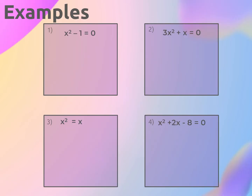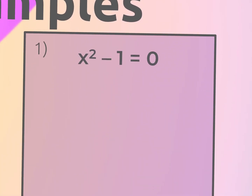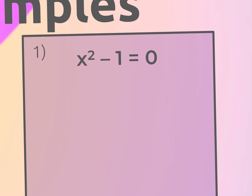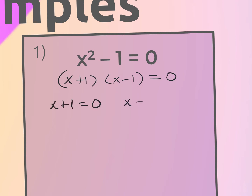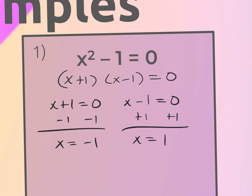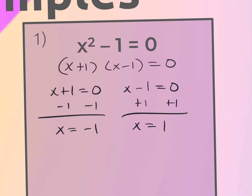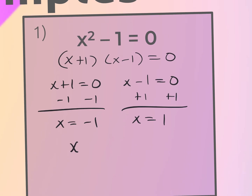For the first one, notice it's already set equal to zero. This is the difference of two squares, so this will factor into (x + 1) and (x − 1). Now I set each parentheses equal to zero: x + 1 = 0 gives x = −1, and x − 1 = 0 gives x = +1. On a standardized test they might show the answer as x = ±1.